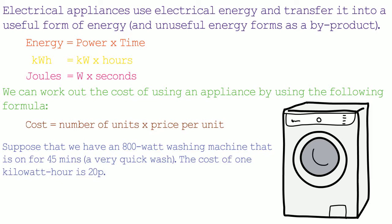To convert watts into kilowatts we divide by 1000, so 800 divided by 1000 gives us 0.8 kilowatts. To convert the time into hours, we do 45 minutes divided by 60, which gives us 0.75 hours. Therefore, energy equals 0.8 kilowatts times 0.75 hours, which gives us 0.6 kilowatt hours.